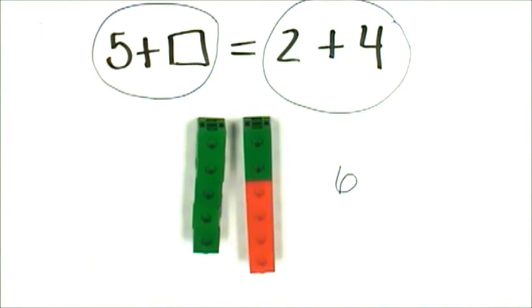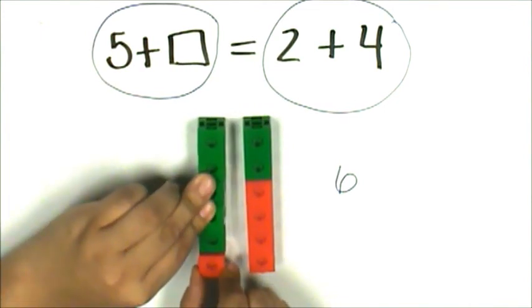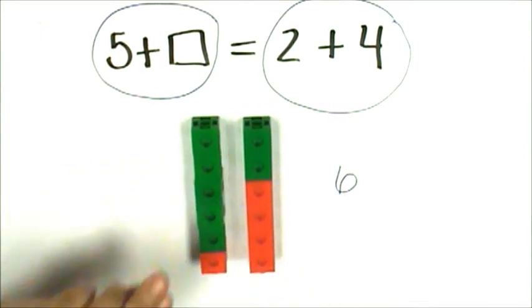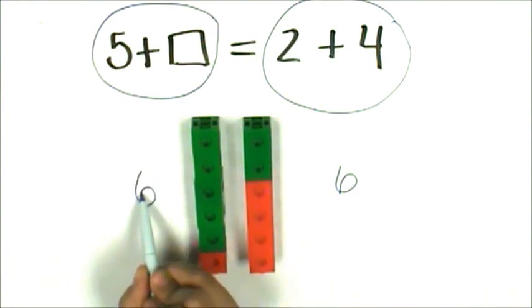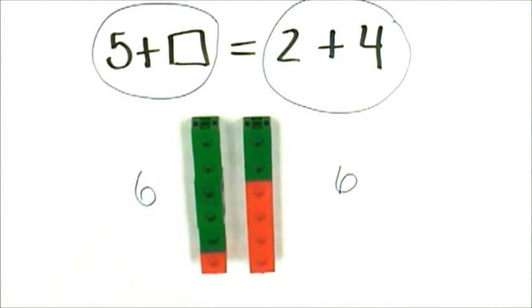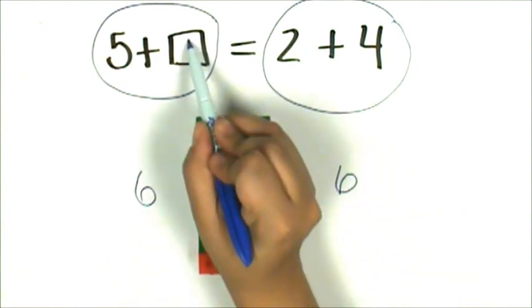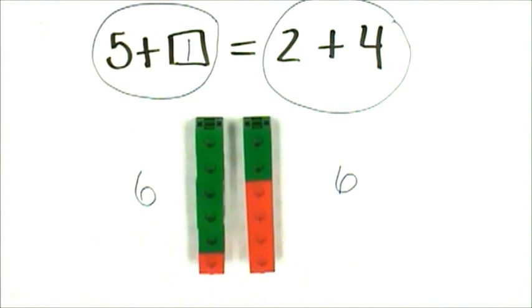If I add 1 more connecting cube to my train on the left, they are now the same length. This is 5 and 1 more, 6 connecting cubes. That means 5 plus 1 equals 6. The unknown number is 1.